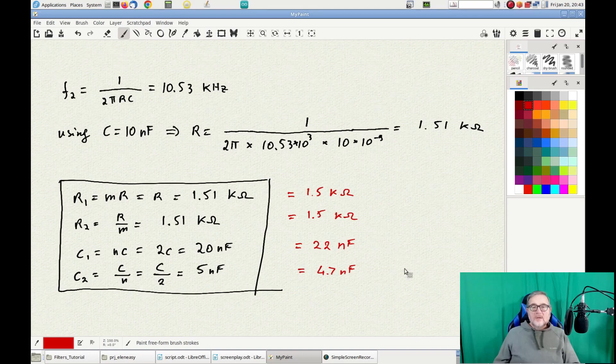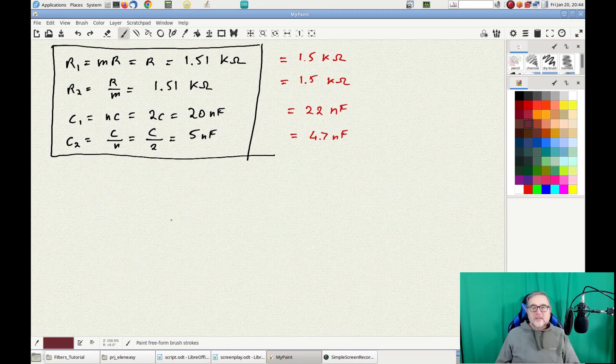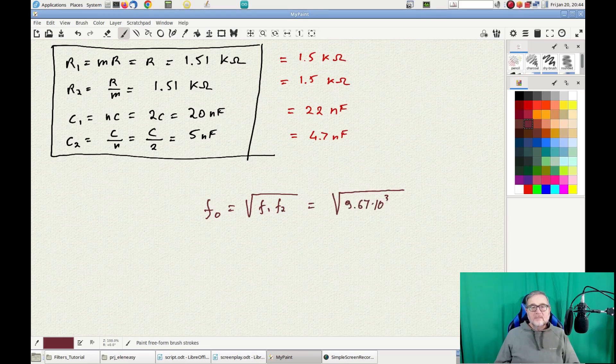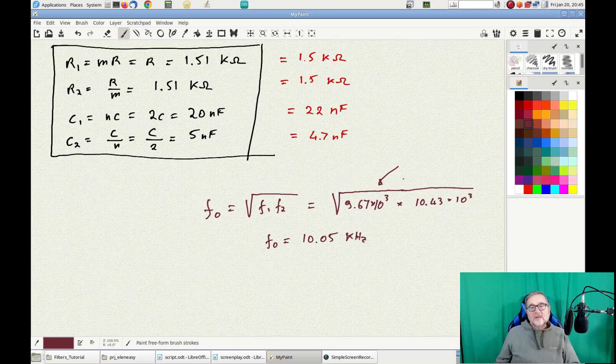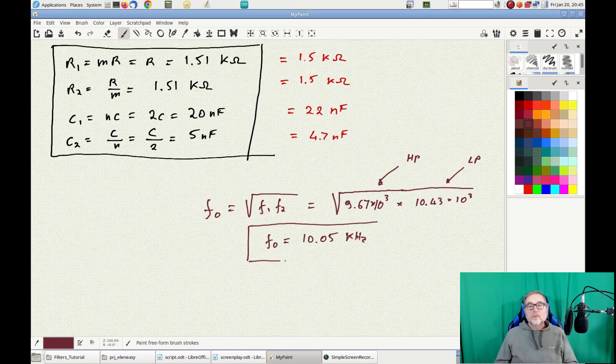All in all, with the adjusted values of the components, due to what we can find in the market, the actual cutoff frequency will be 10.43 kHz, and F1 will be 9.67 kHz, which will give us a calculated center frequency of 10.05 kHz, which is definitely close enough to what we actually need.